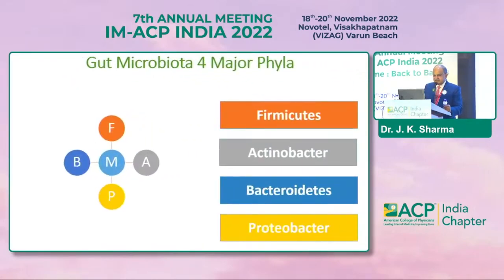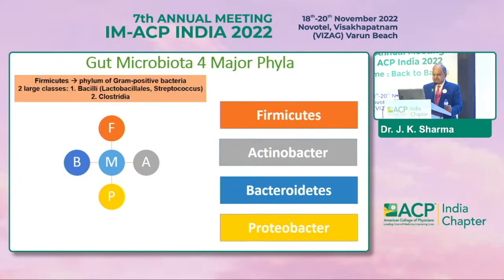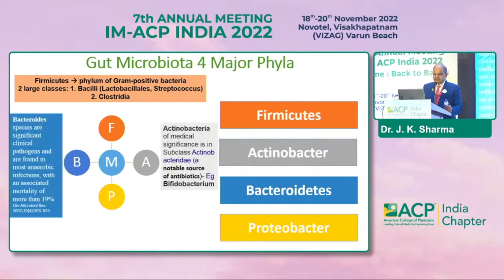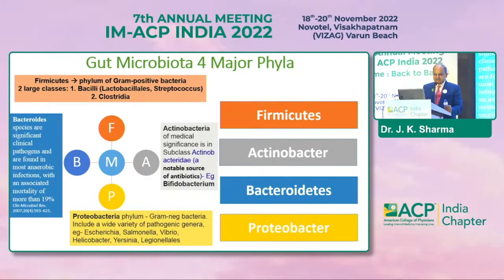In liver diseases, as noted, the maximum number is present in the colon. The four major phyla are: Firmicutes — a phylum of gram-positive bacteria with large classes including Bacilli (Lactobacillus and Streptococcus) and Clostridia; Actinobacteria, of medical significance in the subclass Actinobacteridae, a notable source of antibiotics like Bifidobacterium; and Bacteroides, which are significant clinical pathogens found in most anaerobic infections with associated mortality of more than 19%.